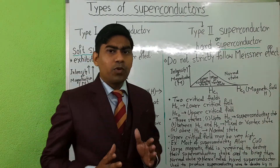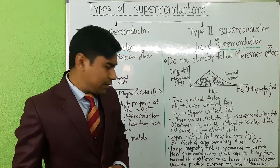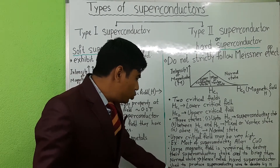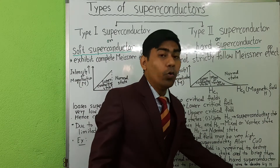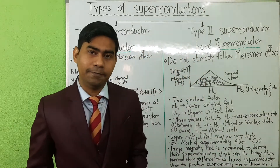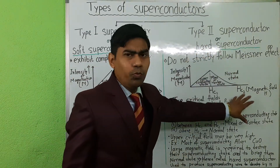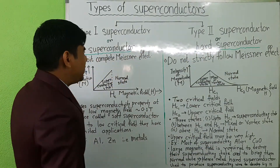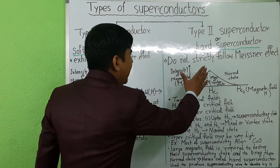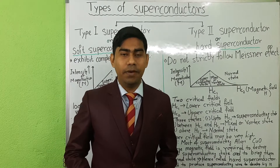Type 2 superconductors have a wider range of practical applications. For example, they can be used to produce superconducting wire to develop high magnetic fields. Thus, we discussed type 1 superconductors and type 2 superconductors. Thank you for watching this video.